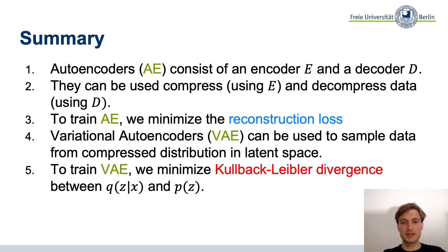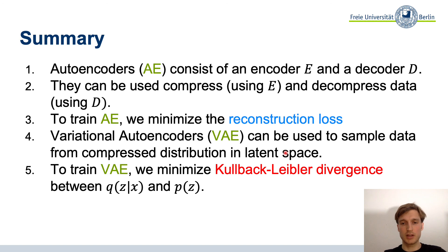Let's summarize this lecture. Autoencoders consist of an encoder and decoder and can be used to compress and decompress data, trained by minimizing a reconstruction loss (MSE). Variational autoencoders can be used to sample data from a compressed distribution in latent space. That compressed distribution is enforced to be a standard Gaussian by training the VAE to minimize the KL divergence between q(z|x) — the encoder distribution — and p(z) — the prior distribution.